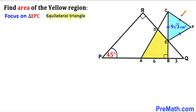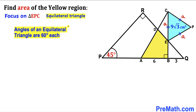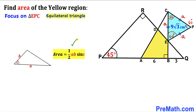Let's focus on the blue equilateral triangle EPC and find its side length. Since all side lengths are equal, let's call each one lowercase a. Recall that all angles of an equilateral triangle are 60 degrees each. Now let's use the area of a triangle formula: area equals one half times a times b times sine of angle C.